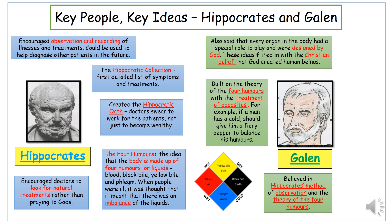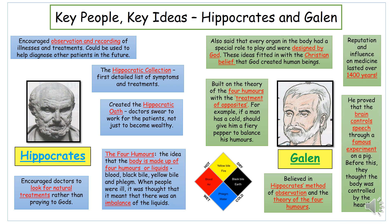Galen is also linked to the Christian Church, which is something we'll explore further next week. When the Christian Church became very powerful in medieval Europe and Britain, it adopted Galen's ideas about the body and health — and this influenced everything that everyone involved in medicine was learning. Nearly one and a half thousand years after he died, Galen remained a hugely important figure. One specific example: he proved that the brain controls speech through an experiment on a pig, disproving the belief that the body was controlled by the heart.